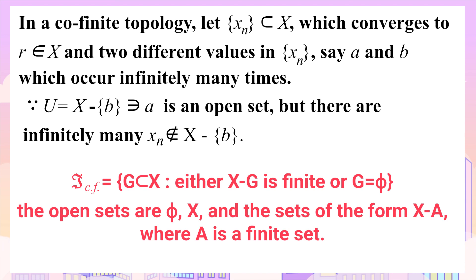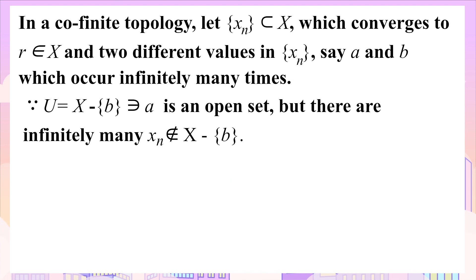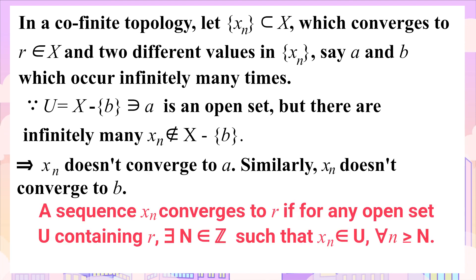So there is an open set U = X - {b} containing a. But if b, which was also in {xₙ} infinitely many times, is removed from X, then there will be many such xₙ which are not contained in the set U = X - {b}.